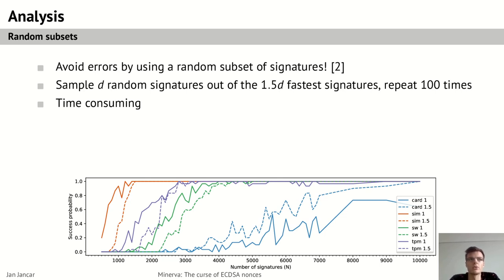And this can be explained by the fact that taking a random sample of these signatures out of the 1.5 times the fastest does not choose the signatures with the largest amount of information, that's the fastest signatures. And as this is also a time-consuming technique as each attack now runs like a hundred times more, we did not use this in the further experiments. But it is a promising technique of fixing errors in very noisy and very error prone datasets.